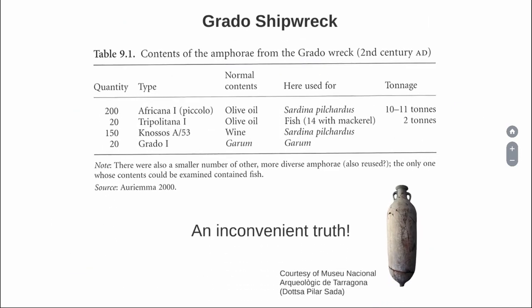There are selected archaeological contexts that suggest that might not be the case. This is the content of the Grado shipwreck, a shipwreck full of these kind of African amphorae — two hundred of them. They are typically associated with olive oil, and African 1 is one of those types of amphorae that are particularly well studied, for which we can never know 100% for sure that it was used exclusively for African olive oil. We've got a pretty good hunch that it's olive oil — but in this case it's full of 10 to 11 tons of fish products.